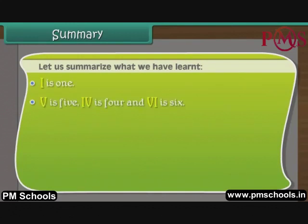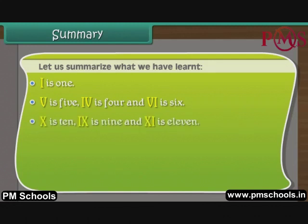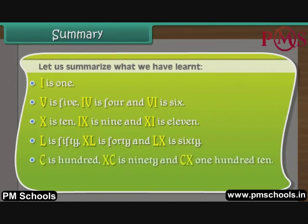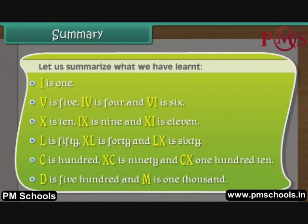To summarize: VI is 6, X is 10, IX is 9, and XI is 11. L is 50, XL is 40, and LX is 60. C is 100, XC is 90, and CX is 110. D is 500 and M is 1000.